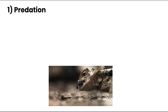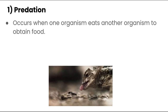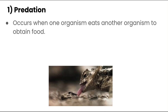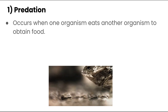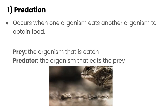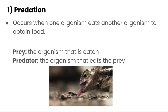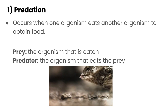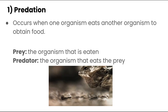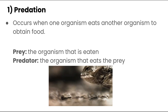Let's start with predation. Predation occurs when one organism eats another organism to obtain food — kind of like our lizard here eating the ant. We would say the prey is the organism that's eaten, so our prey is the ant. And our predator is the organism that eats the prey, which in this picture would be our lizard.